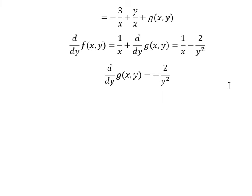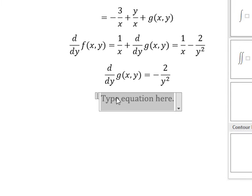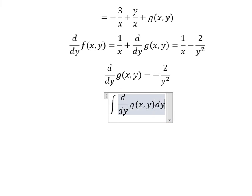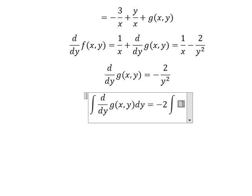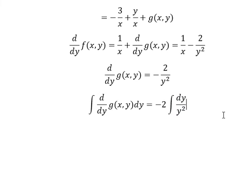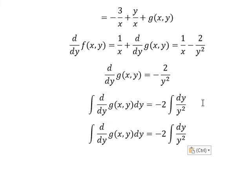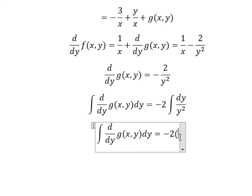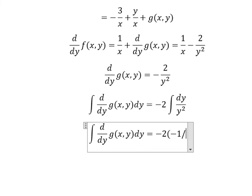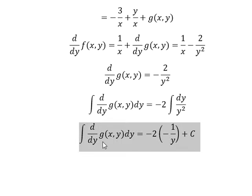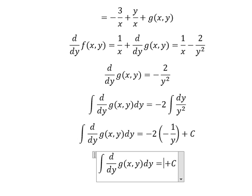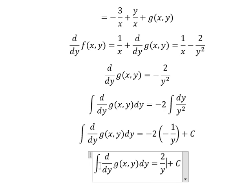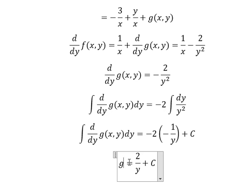Next, we integrate both sides. The integral of g'(y) gives negative 1 over y, and we add the constant C. Negative with negative gives 2 over y. And we know that 3xy relates to this term.